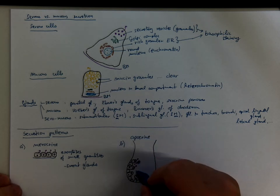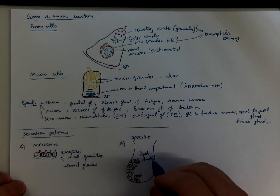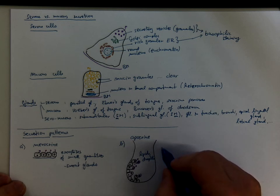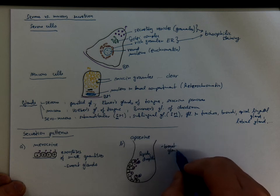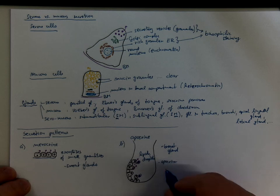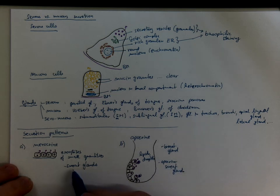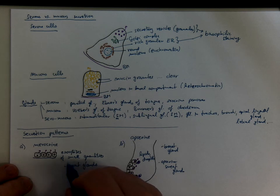And the substances that are released in this way are usually lipids, droplets, or large proteins. And examples would be breast gland or apocrine sweat glands. These are different glands than the ordinary sweat glands, which are also called eccrine sweat glands.